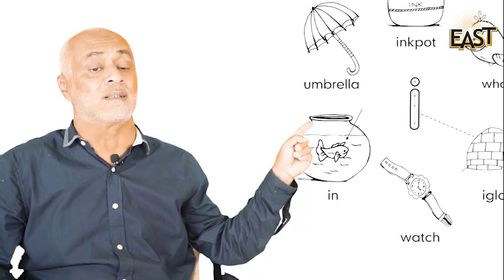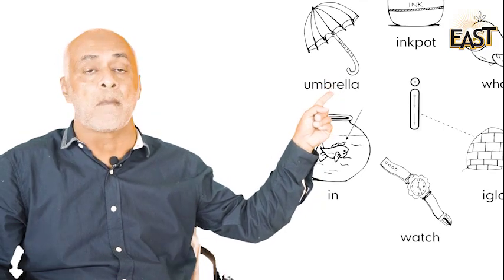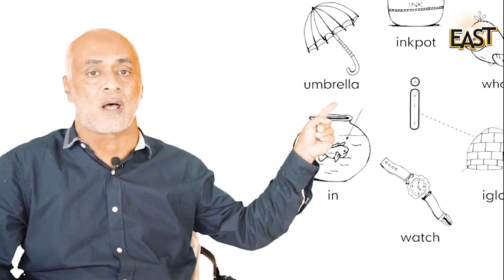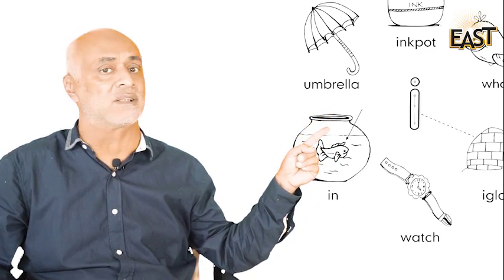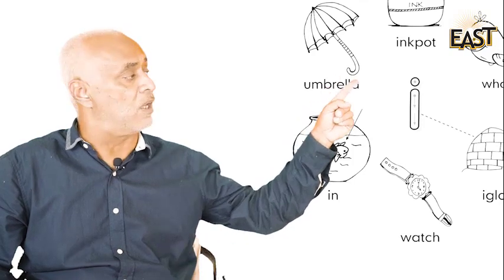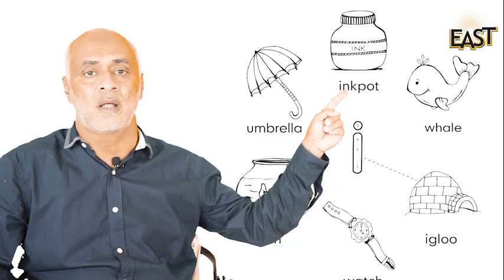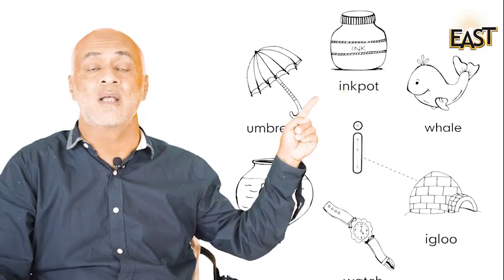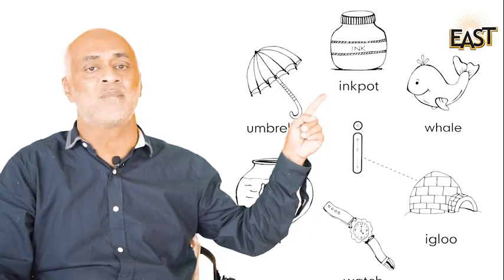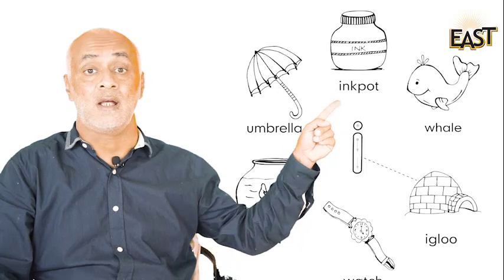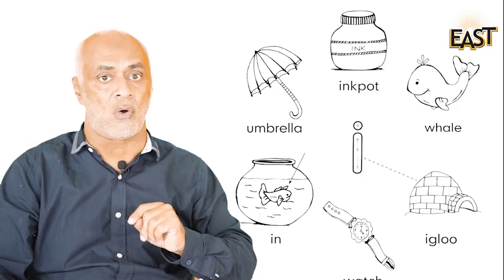What is this? Umbrella, umbrella, umbrella. So does umbrella begin with 'ee'? No, it's not! And what is this? Ink pot, ink pot. The beginning sound of ink pot is 'ee' — yes! Ee — ink pot, ee — ink pot. Now practice writing 'ee' in your copy.